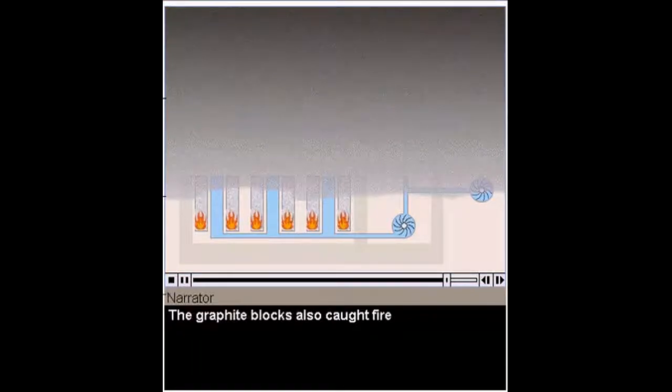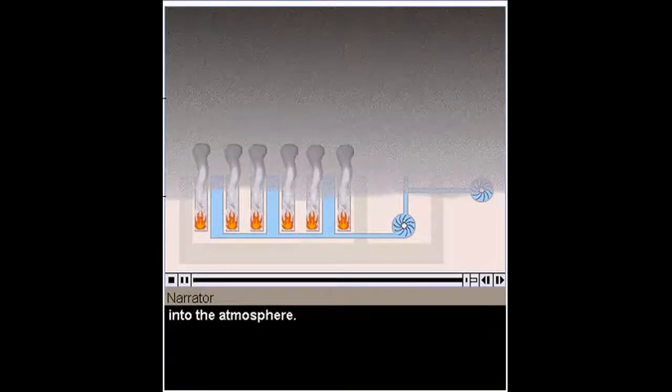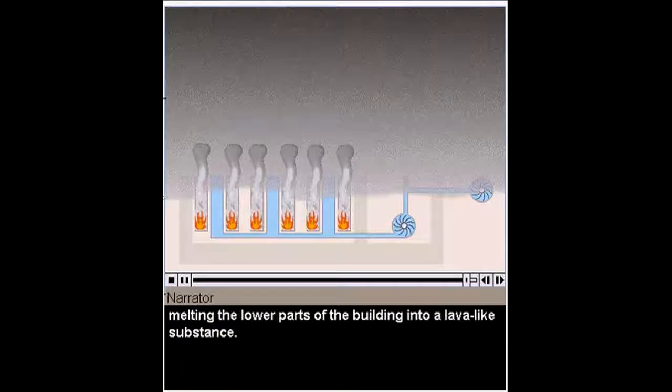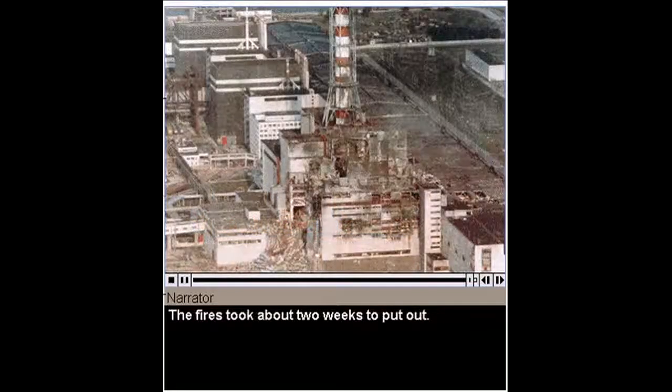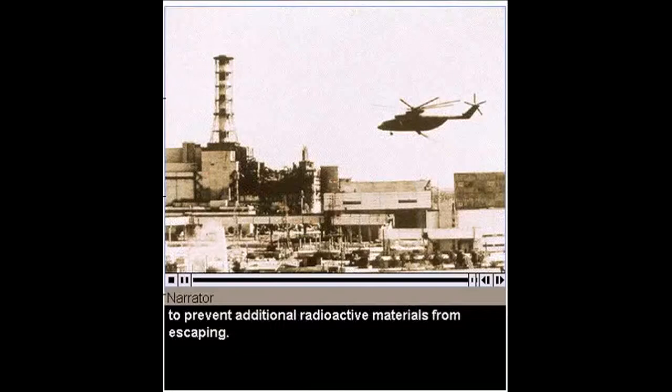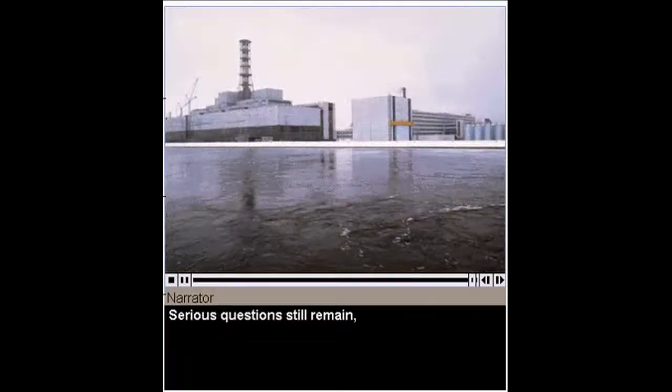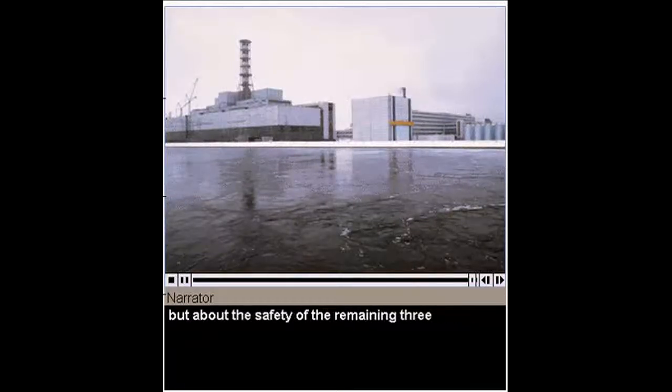The graphite blocks also caught fire, and the smoke sent radioactive particles from the damaged reactor into the atmosphere. What was left of the core continued to heat, melting the lower parts of the building into a lava-like substance. The fires took about two weeks to put out. A concrete containment building called the sarcophagus was constructed over the reactor site to prevent additional radioactive materials from escaping. Serious questions still remain, not only about the containment of the radioactive debris, but about the safety of the remaining 3,000 reactors on the site.